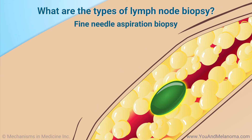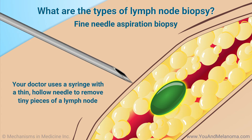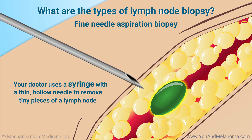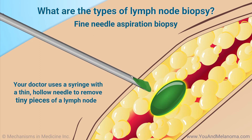In a fine needle aspiration biopsy, the doctor uses a syringe with a thin, hollow needle to remove tiny pieces of a lymph node.